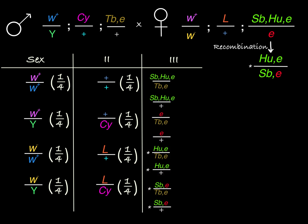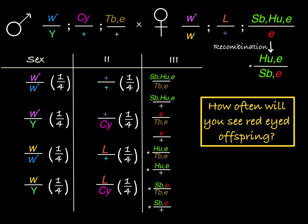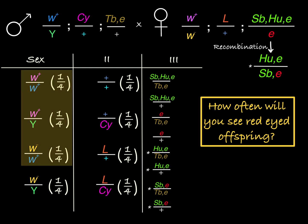Let's answer some questions about this cross. How many distinct genotype options might we see in the offspring? We see four sex chromosome combination possibilities, four second chromosome combination possibilities, and eight third chromosome possibilities. Multiplying these together, we have 128 distinct offspring genotypes that could result from this cross. How often do you expect to see red eyes in the offspring? Three of the four eye color options show the red phenotype, meaning they contain the W-plus allele, so I would expect three out of four, or 75 percent, of offspring to have red eyes.